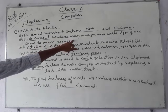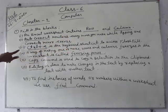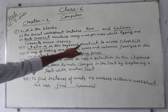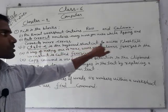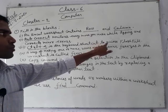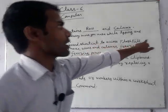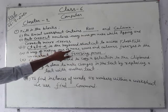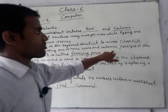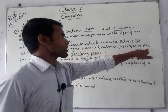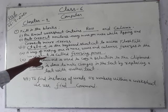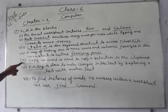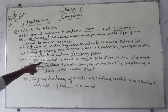Third, Ctrl+E is the keyboard shortcut to access Flash Fill. Fourth, a way of making one or more rows and columns fixed in the worksheet is called freezing panes.